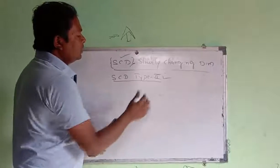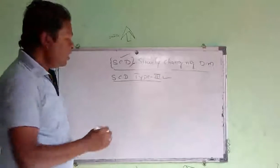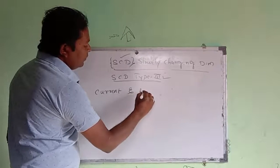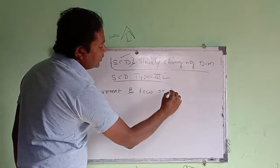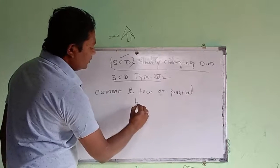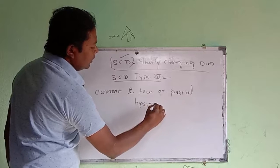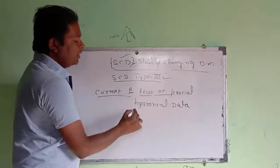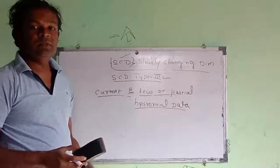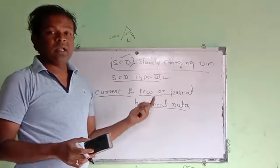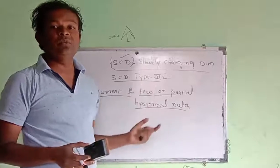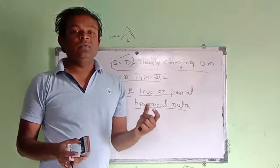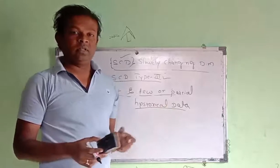In SCD Type 3, we can store current data and few or partial historical data. So to summarize: SCD Type 1 stores only current data; SCD Type 2 stores current and complete historical data; SCD Type 3 stores current data and partial historical data.